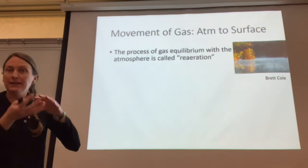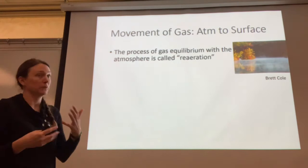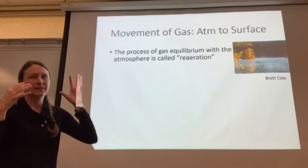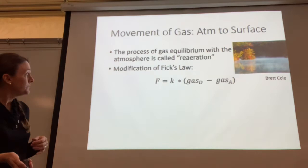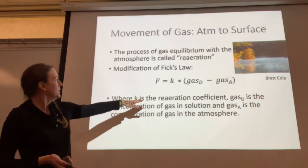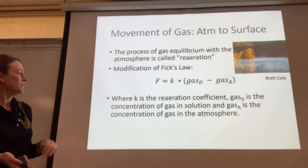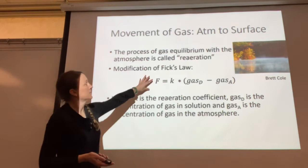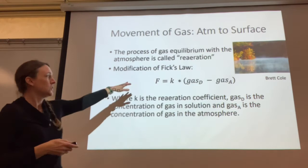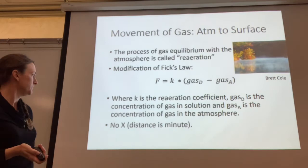The movement of gas from the atmosphere into bodies of water is called re-aeration — this process of gas equilibrium with the atmosphere. There's a modification of Fick's Law where flux uses k, the re-aeration coefficient, multiplied by the concentration of gas in solution minus the concentration of gas in the atmosphere. We can calculate the flux of a gas either from the water out into the atmosphere, or from the atmosphere into the water, using this modification of Fick's Law.